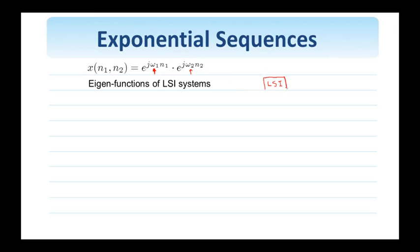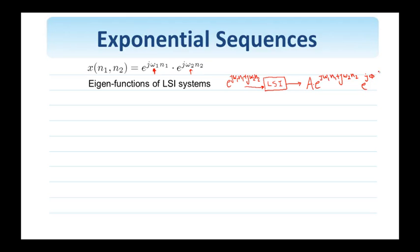What this means is that if I have an LSI system — a system that is both linear and spatial invariant — and put at its input a complex exponential like e to the j omega 1 n1 plus j omega 2 n2, then the same complex exponential will appear at the output of the system. These complex exponentials simply go through linear and spatial invariant systems, with a possible change of amplitude and a possible addition of a phase shift. The second important property is that these complex exponentials are the building blocks of any signal — I can write any signal as a weighted sum of these complex exponentials.